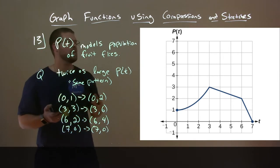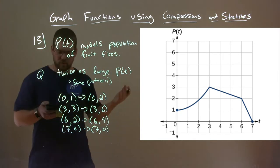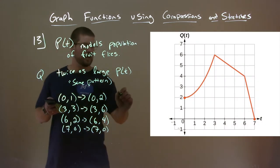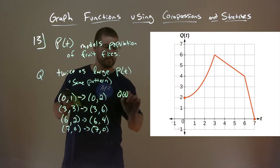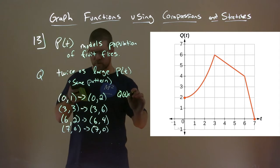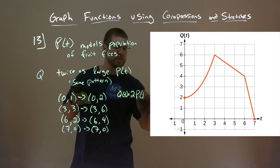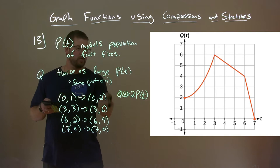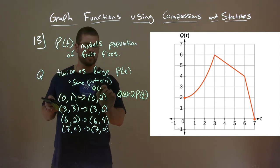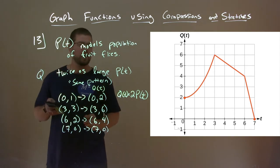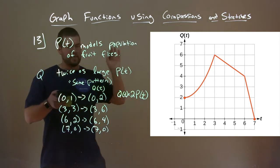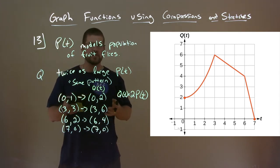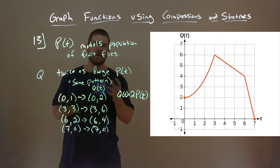Those points guide us to make the graph in orange. This is our q of t. Q of t is equal to 2 times p of t. And the whole graph is vertically stretched by a factor of 2.